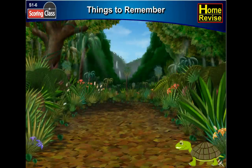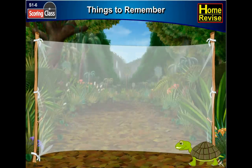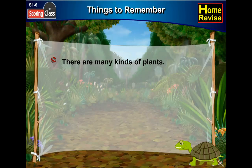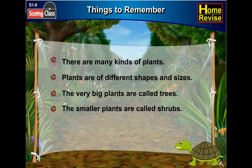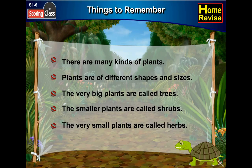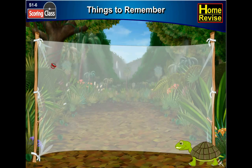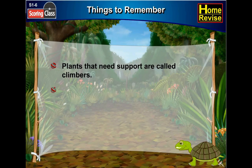Things to remember. Here are some important things we learnt in the lesson. First, there are many kinds of plants. Second, plants are of different shapes and sizes. Third, the very big plants are called trees. Fourth, the smaller plants are called shrubs. Fifth, the very small plants are called herbs. Sixth, plants that need support are called climbers. Seventh, some plants live for many years. Eighth, some plants live only for a few months.